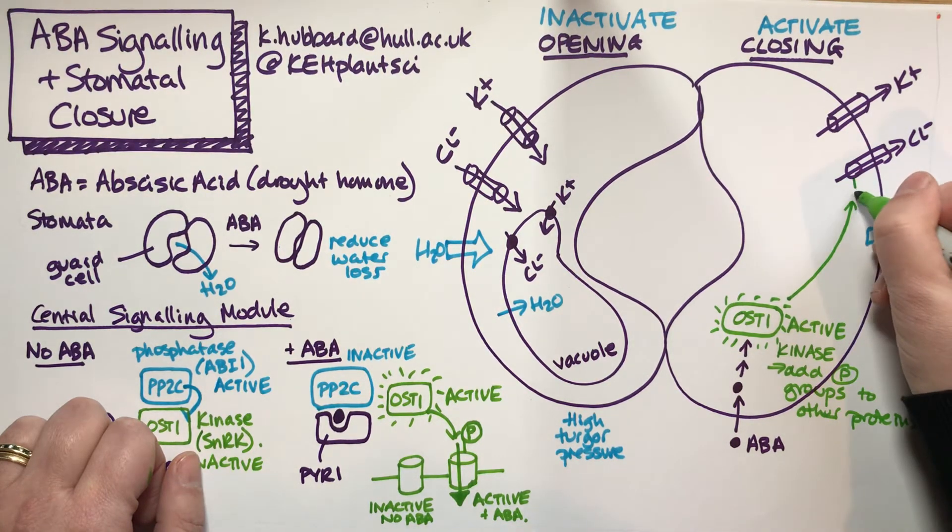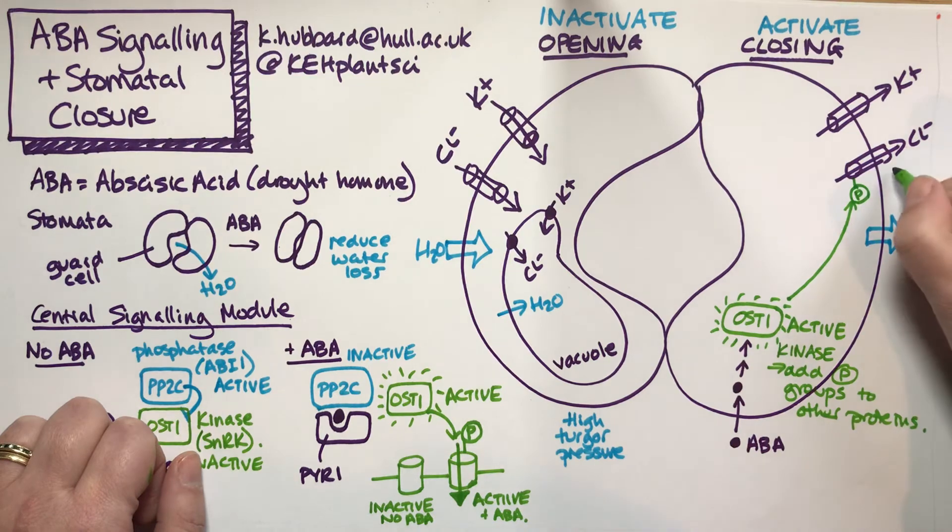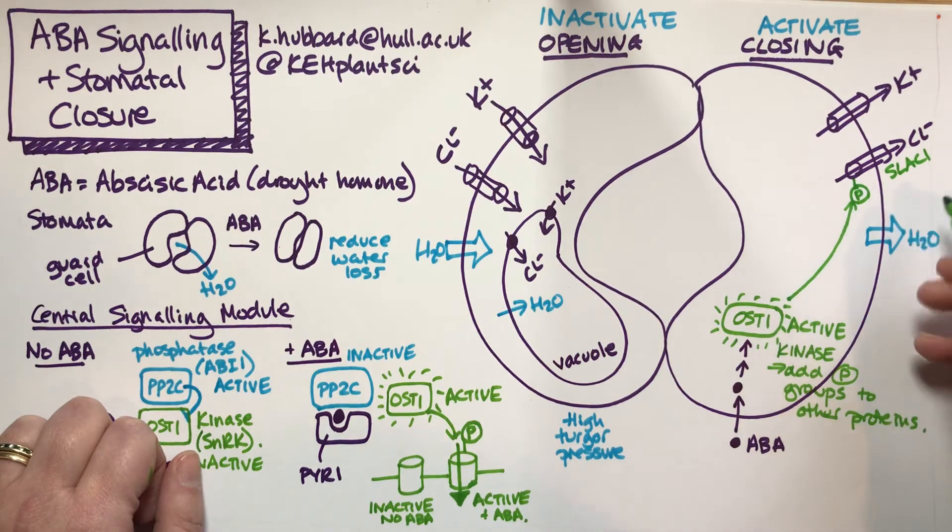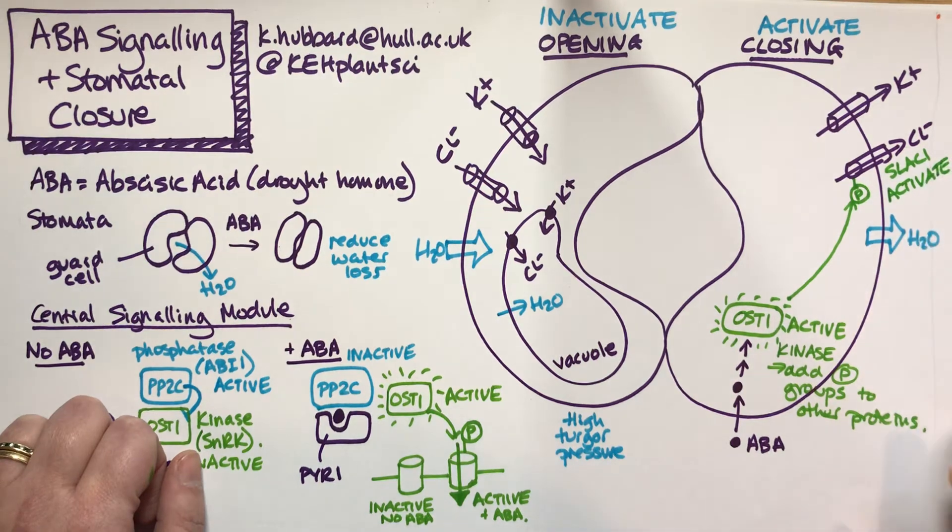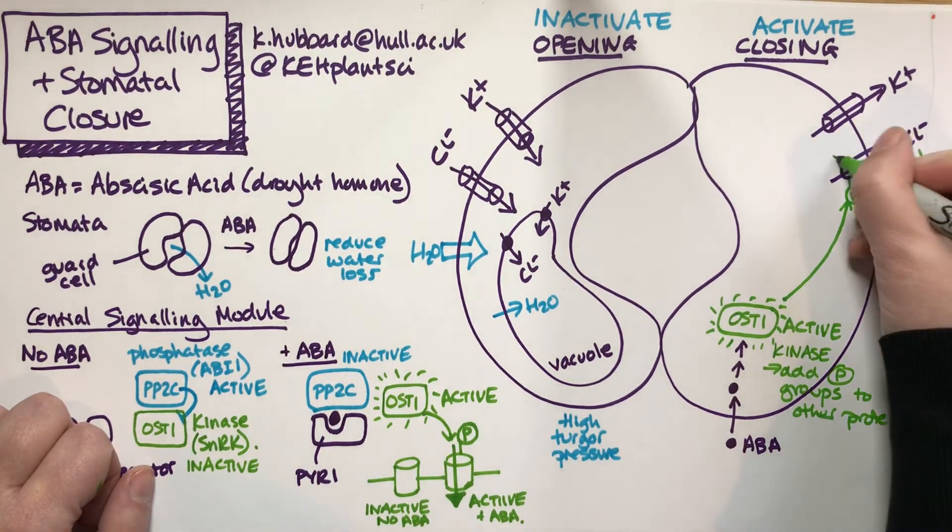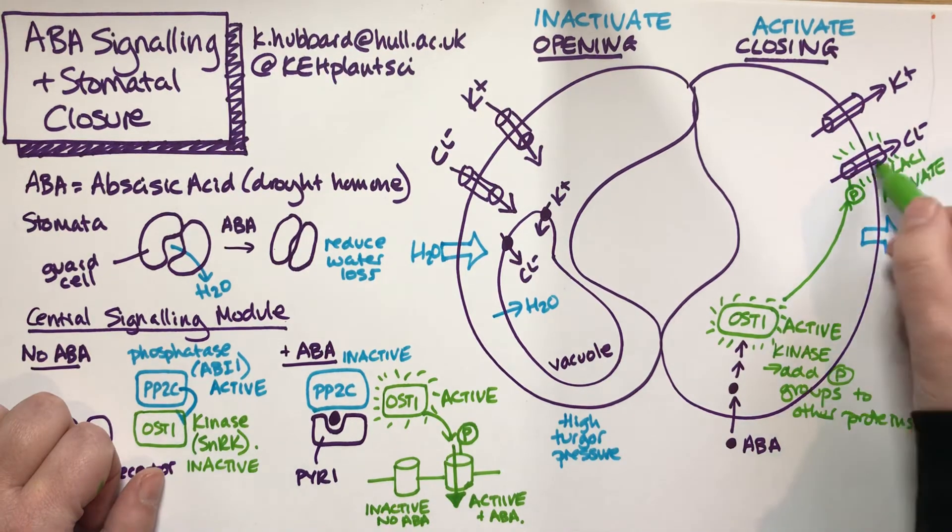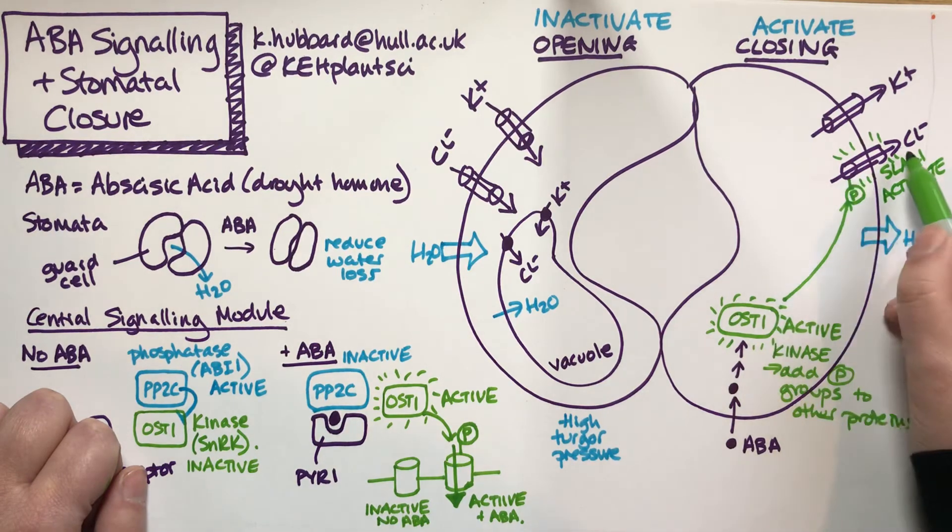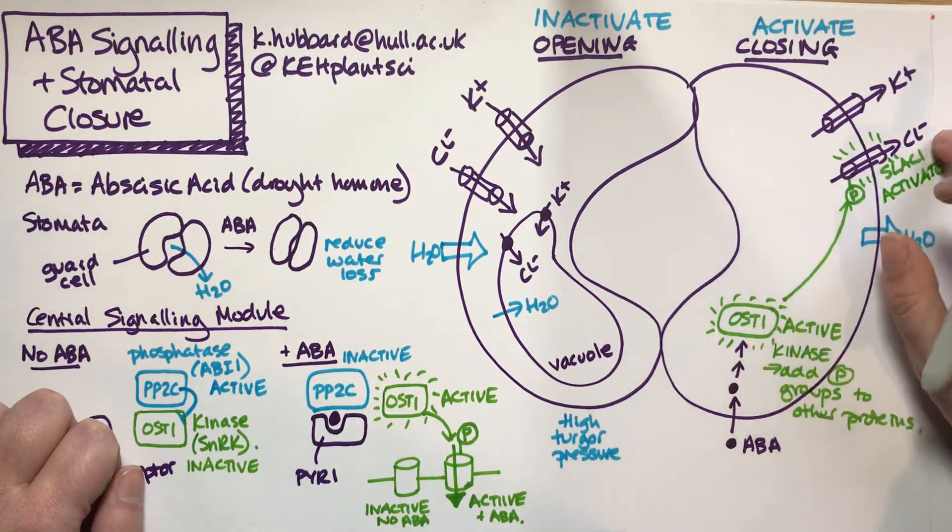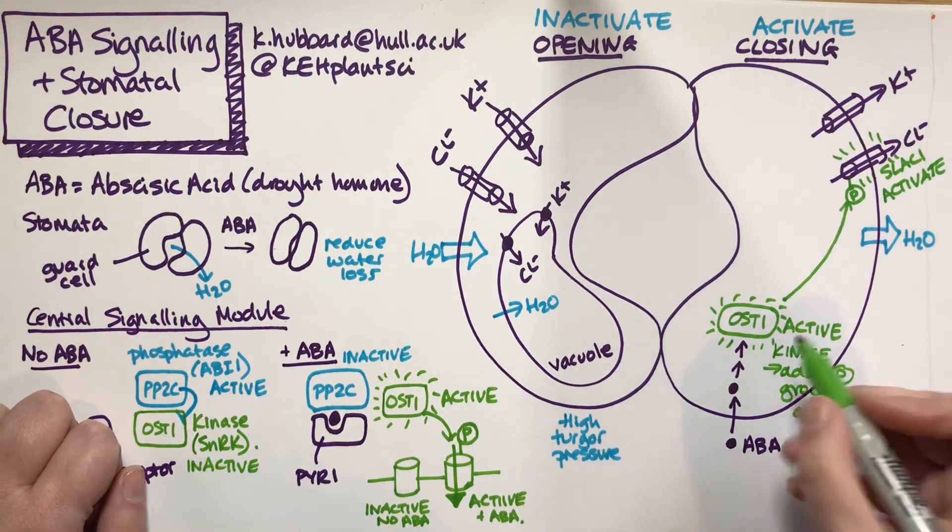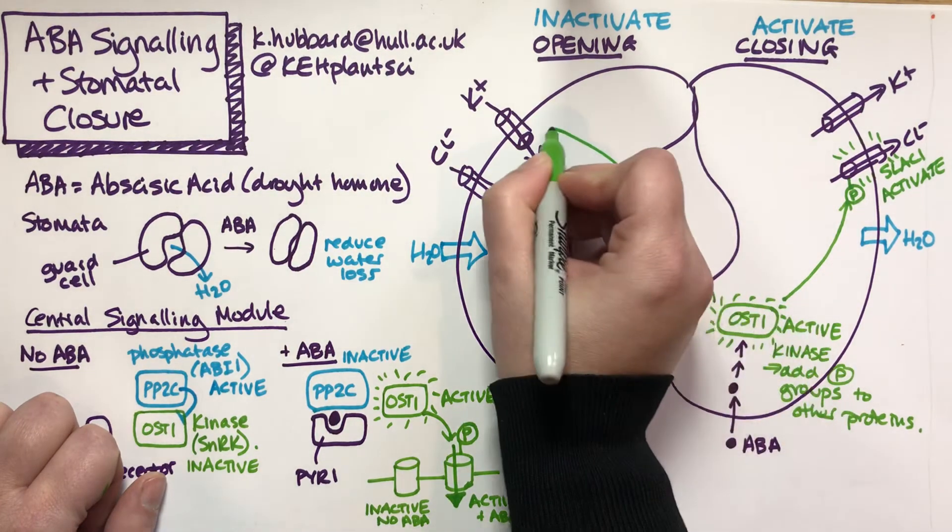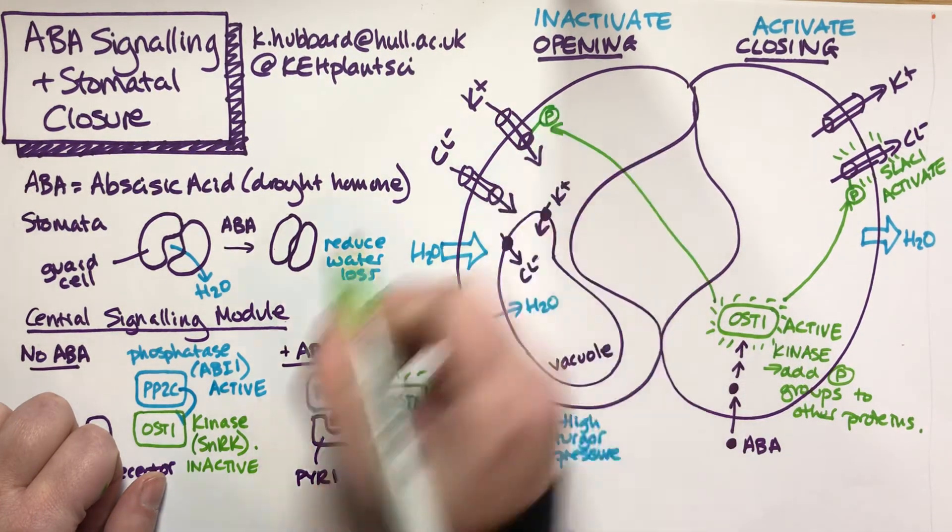What's OST1 going to do? One of the proteins it phosphorylates is this chloride channel, a channel called SLAC1. OST1 adds a phosphate group onto SLAC1 and activates it. With the phosphate group, SLAC1 is active, so we're now getting rid of the chloride. OST1 directly phosphorylates SLAC1, we open the chloride channel, out goes the chloride. If the chloride is going out, so will the water.